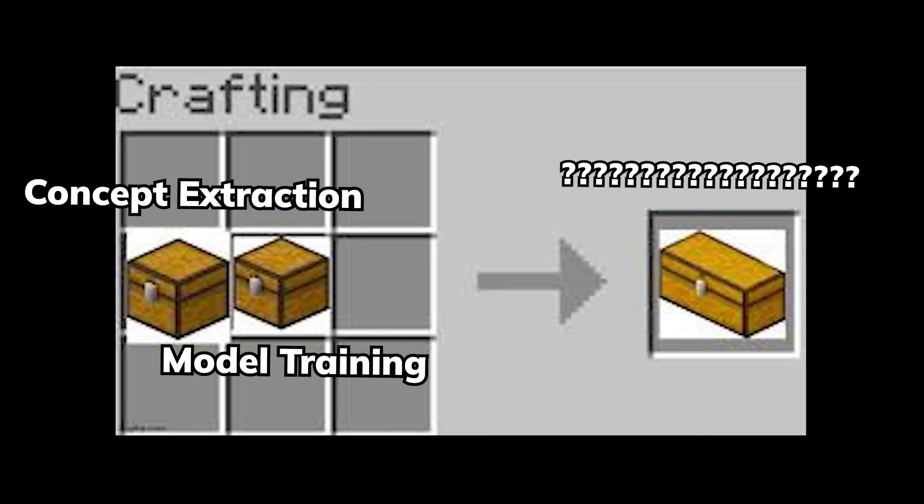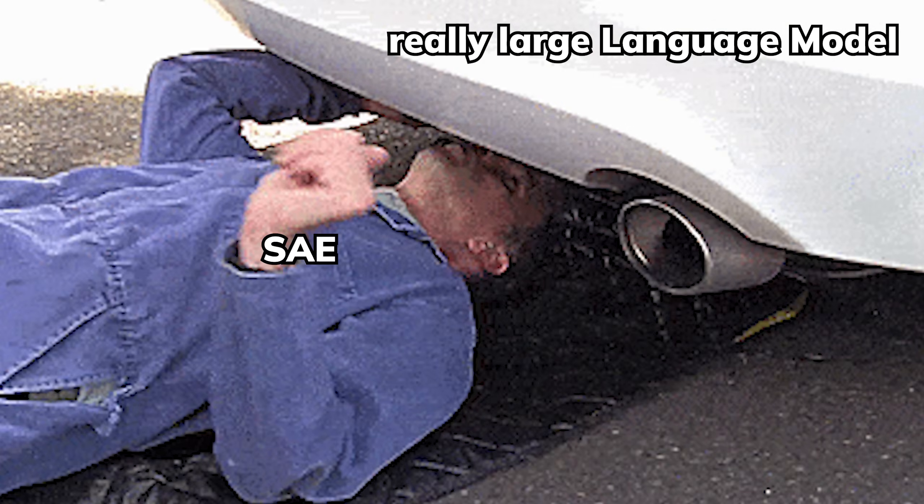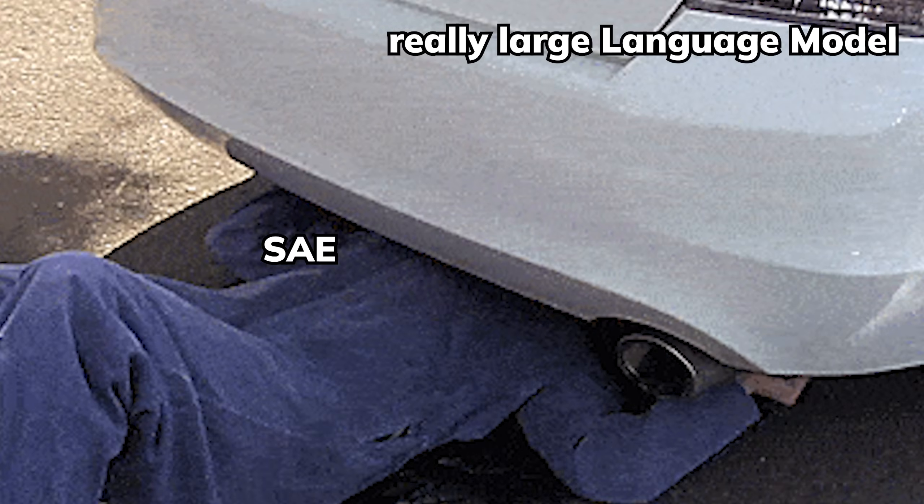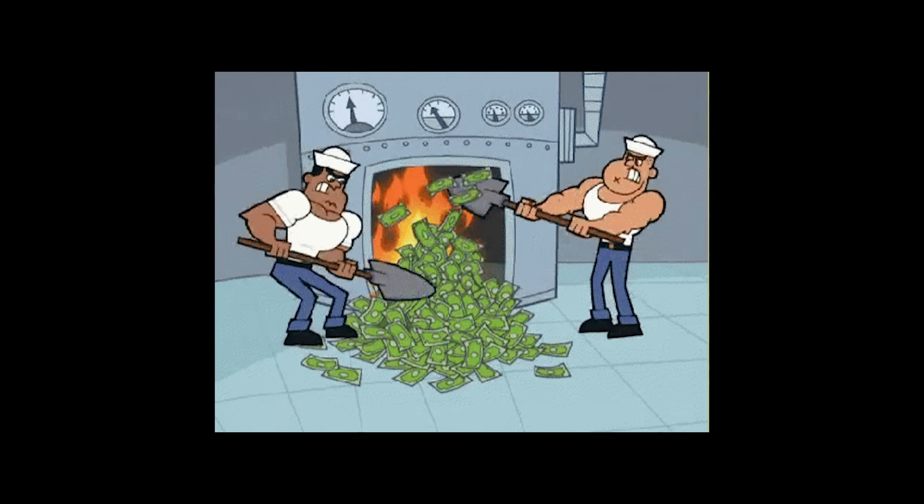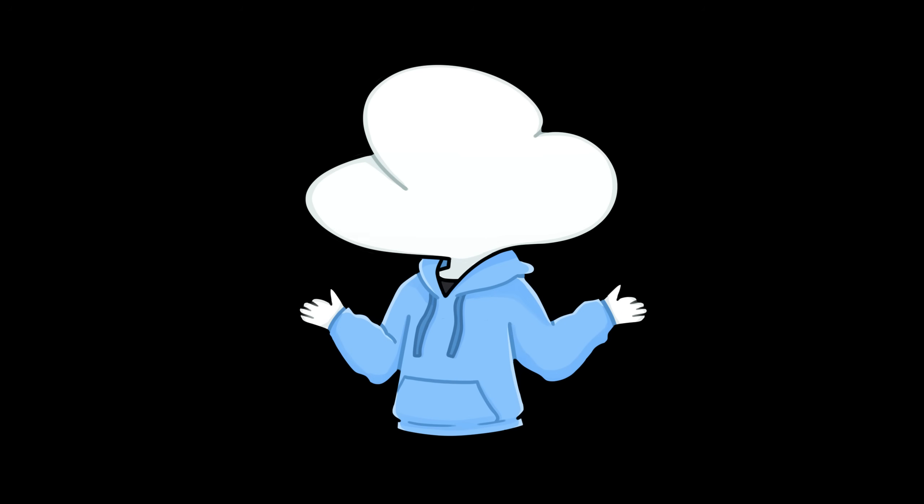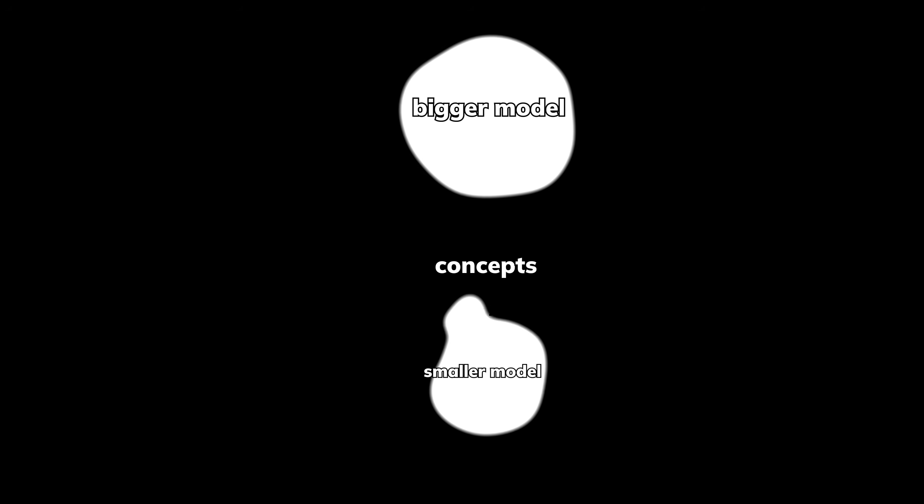What's even more fascinating is that this large concept model creates a new way of training models called weak to strong supervision. Since having SAE models to extract the concepts from super large language models is very expensive due to the exponential increase in connection complexity, what they suggested is that you could use the concept from a small model to guide the training of a stronger model, and it'll still work really well.